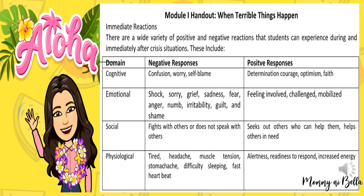The second domain is emotional. Negative responses include shock, sorrow, grief, sadness, fear, anger, numbness, irritability, guilt, and shame. Positive responses include feeling involved, challenge, and feeling mobilized. The third domain is social. Negative responses include fighting with others or not speaking with others. Positive responses include seeking out others who can help and helping others in need. The fourth domain is physiological. Negative responses include tiredness, headache, muscle tension, stomach ache, difficulty sleeping, and fast heartbeat. Positive responses include alertness, readiness to respond, and increased energy.